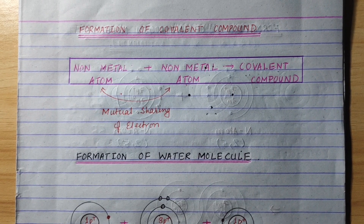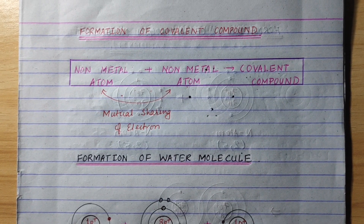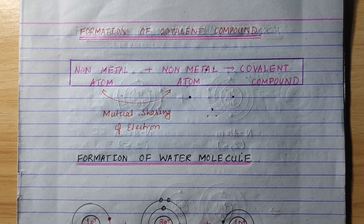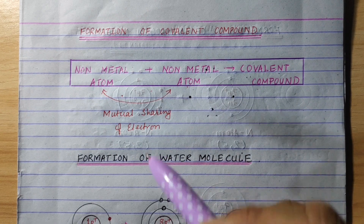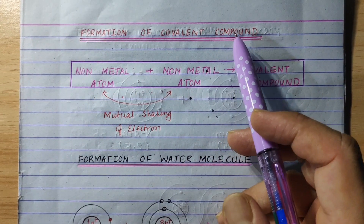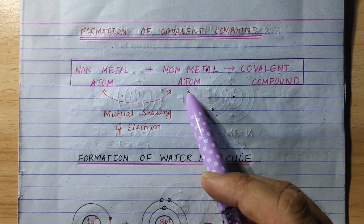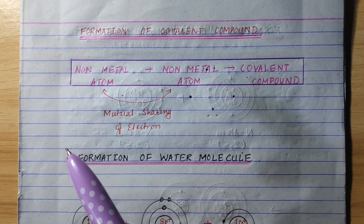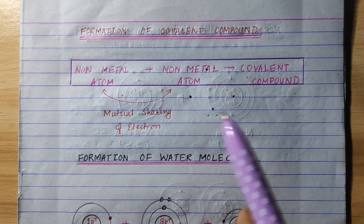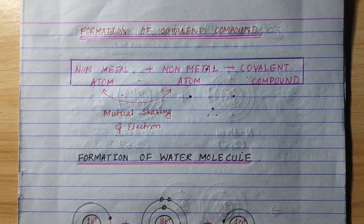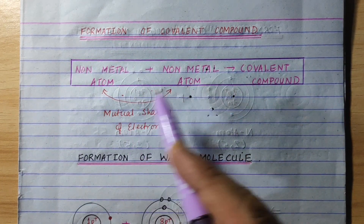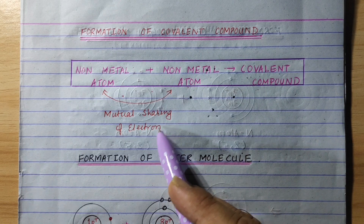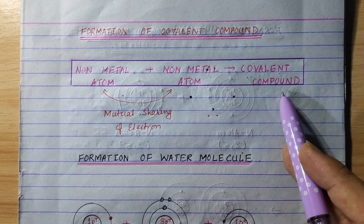Hi everyone. I am going to learn the formation of covalent compounds in this class. A covalent compound is formed when a non-metal atom and a non-metal atom mutually share electrons. If you have a non-metal atom bonded to another non-metal atom, you will have a covalent compound.